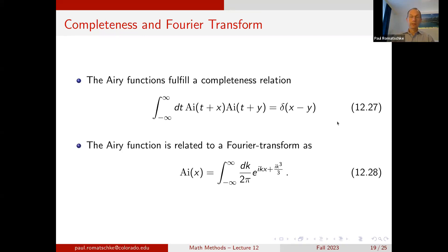As a combination of some of these statements, it turns out that the Airy functions are essentially a particular Fourier transform: specifically, Ai(x) is the Fourier transform of e^{ik³/3}, so if we do a Fourier transform of e^{ik³/3} we get back the Airy function Ai(x).